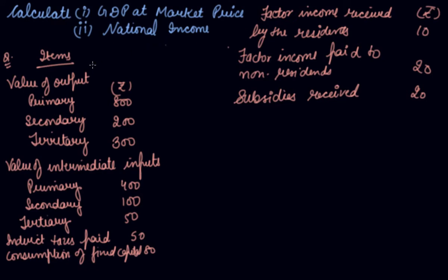Now, this is the question again. In which, you have to calculate gross domestic product at market price that you can calculate using value added method because the items that are given to you relates to your value added method only. And, the second, they've asked you to calculate the national income. Now, these are the various sectors, primary, secondary, tertiary.